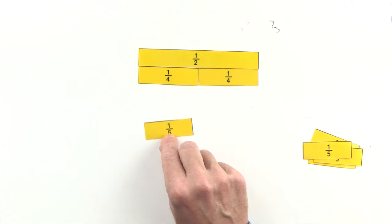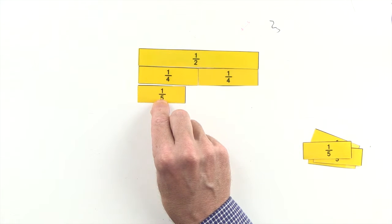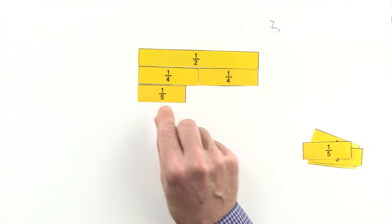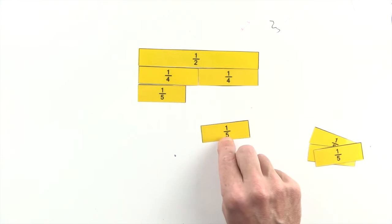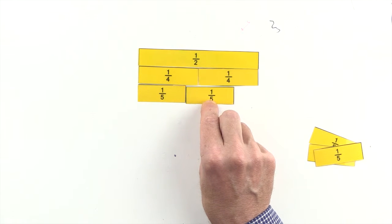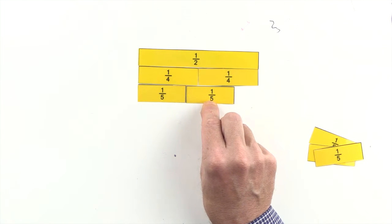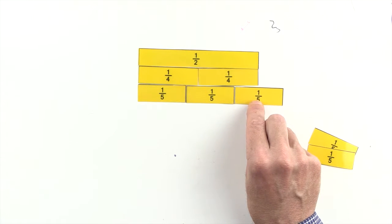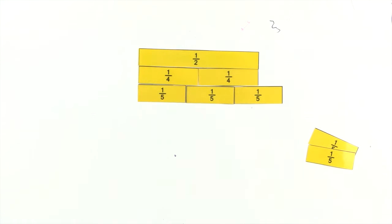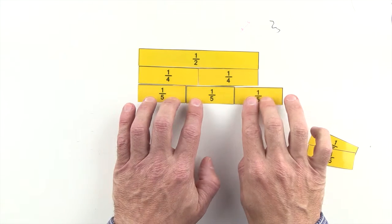One fifth is less than one half. Two fifths are less than one half. And three fifths are greater than one half. So we can't use fifths to make an equivalent fraction to one half.